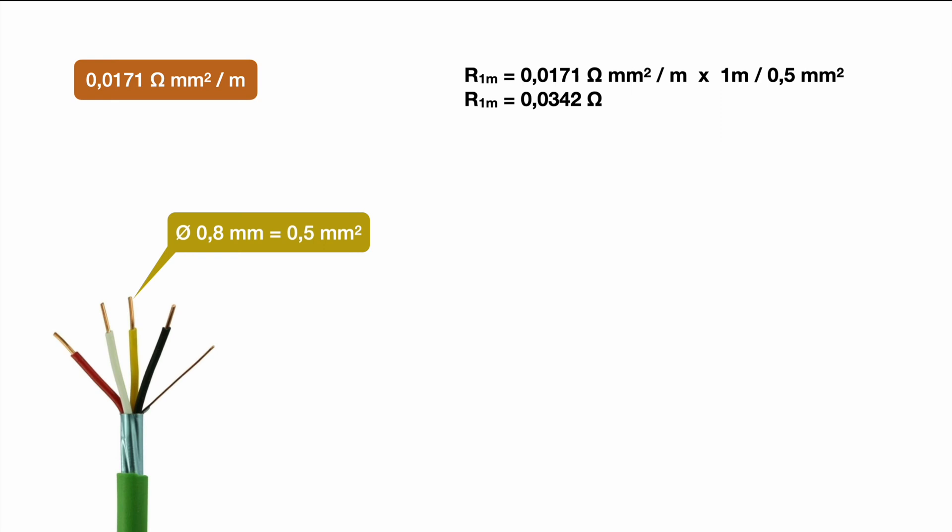Of course we're talking only about the resistance of one wire of our cable which consists of four wires in total. With other words our cable has a resistance of 0.0342 ohm per meter. So of course depending on how many meters we go the overall resistance will increase.